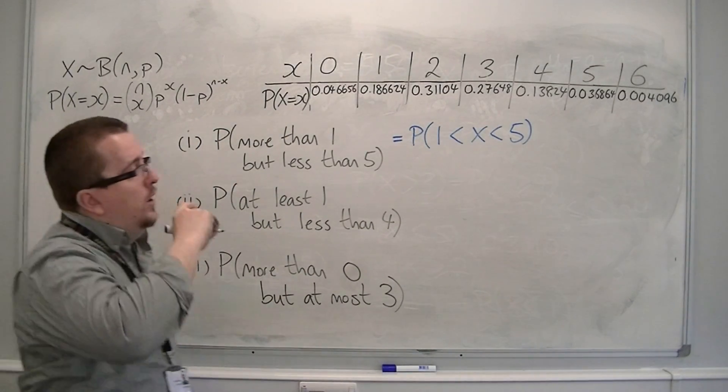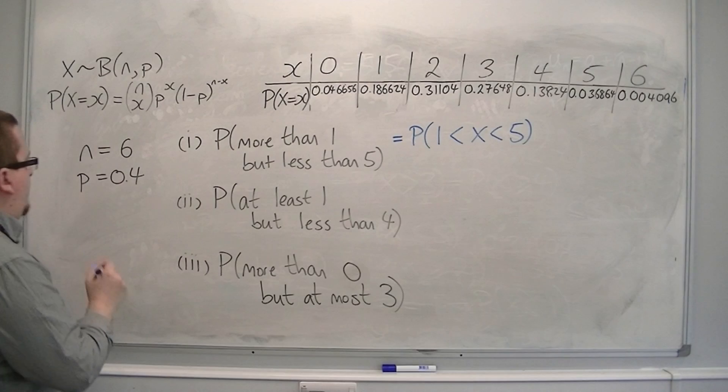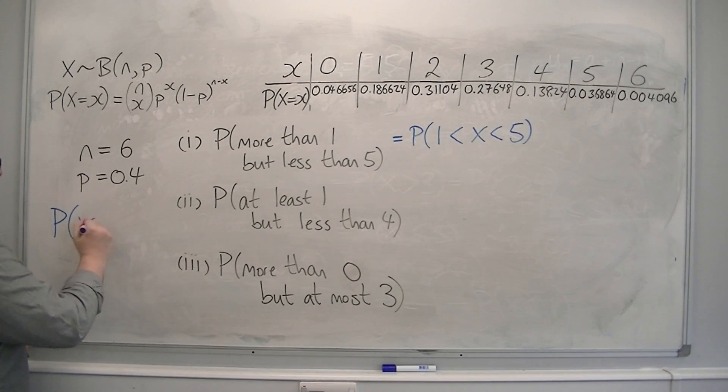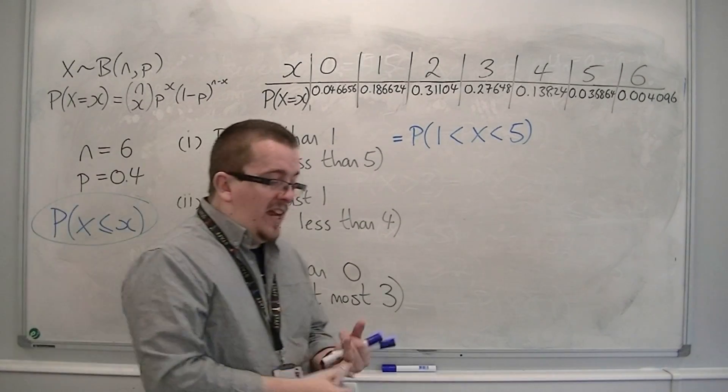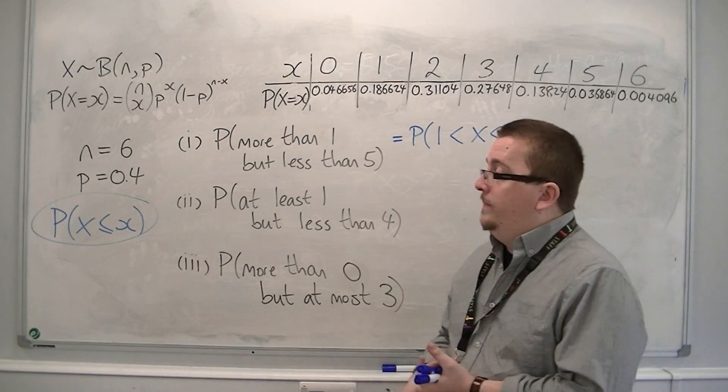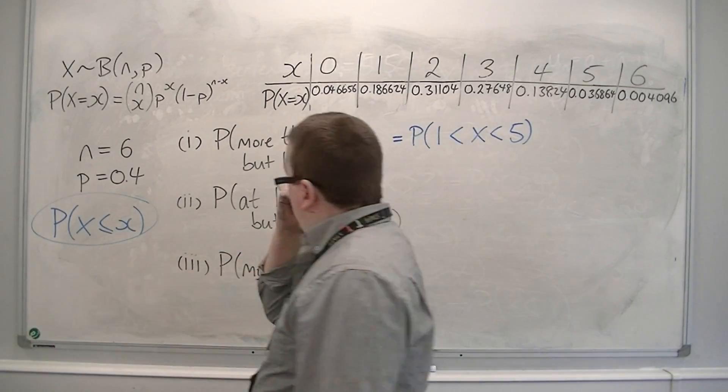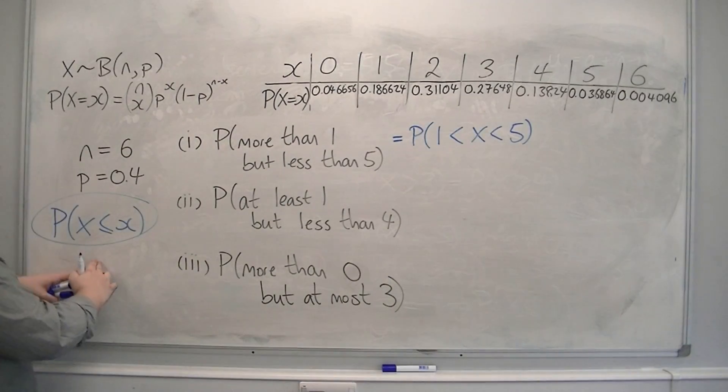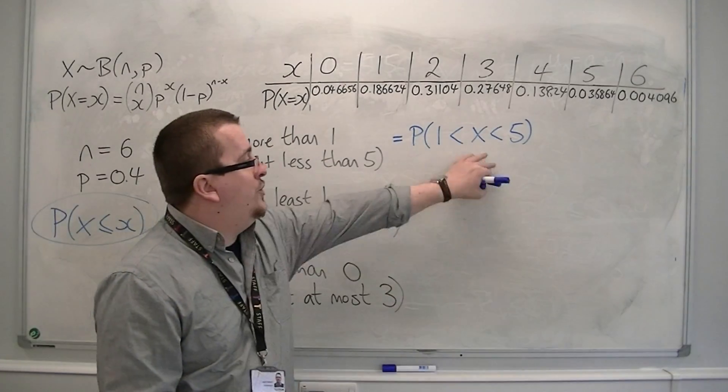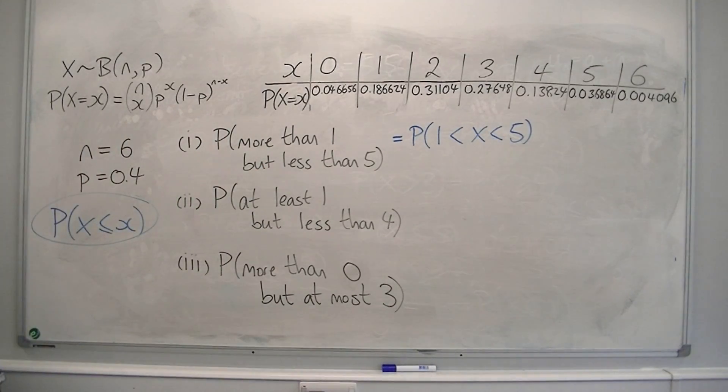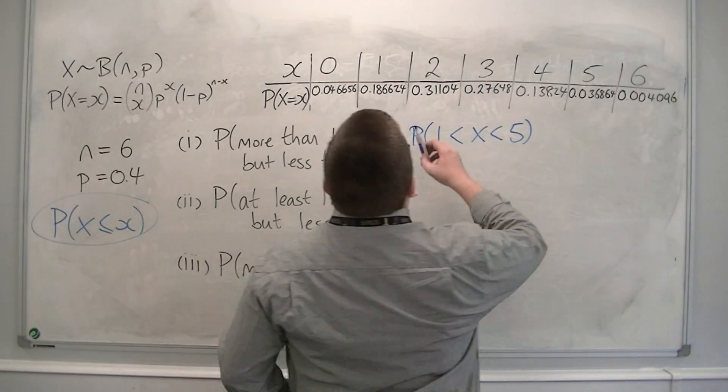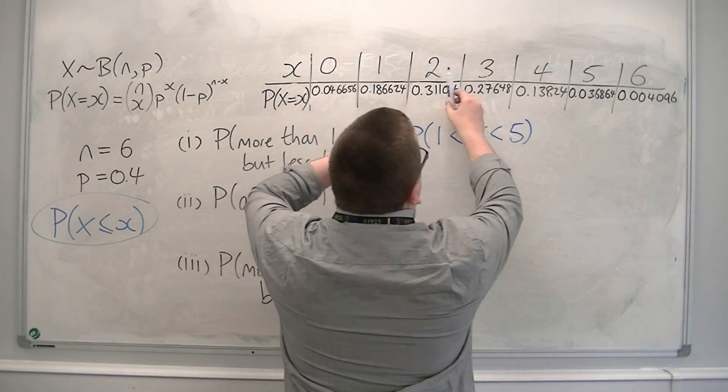Now remember, we want to write these probabilities in the format of x being less than or equal to. These are the sort that I can actually look up in the table at the back of the formula booklet or plug into the TI-82 stats to calculate. So I need them as a less than or equal to, which of course this isn't at the moment. So this is looking at greater than one but less than five.